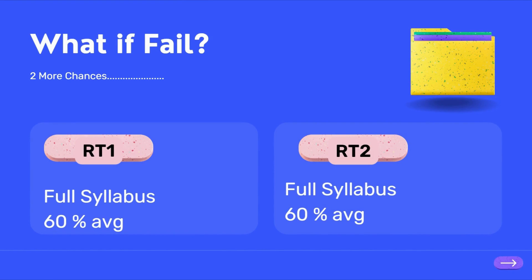A lot of people ask me: what if you fail in stream training? Nothing to worry about — after you fail, you get two chances called RT1 and RT2. For RT1, you have to prepare the full syllabus from primers to the last day of your stream training program. It's really hectic if you haven't been scoring well on a monthly basis. You need to score 60% average to qualify for the next terms.